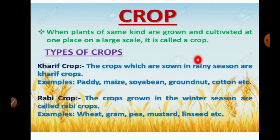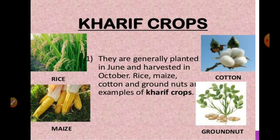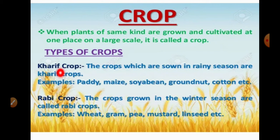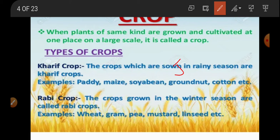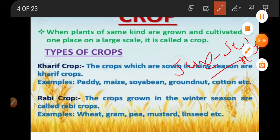We can divide crops into two groups based on the season in which they are grown. The first group is Kharif crops — crops that are sown mainly in the rainy season, like paddy, maize, groundnut, and cotton. These crops are grown in the rainy season, starting from June onwards and ending till September or the initial days of October.